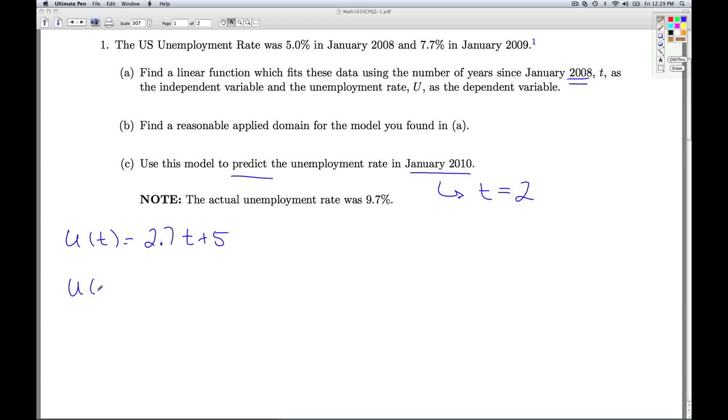And so, I look at u of 2. And everywhere I see a t, I'm going to substitute in the 2. So, I multiply this out. I'm going to get 5.4 plus 5. This gives me 10.4. That corresponds to an unemployment rate of 10.4%.